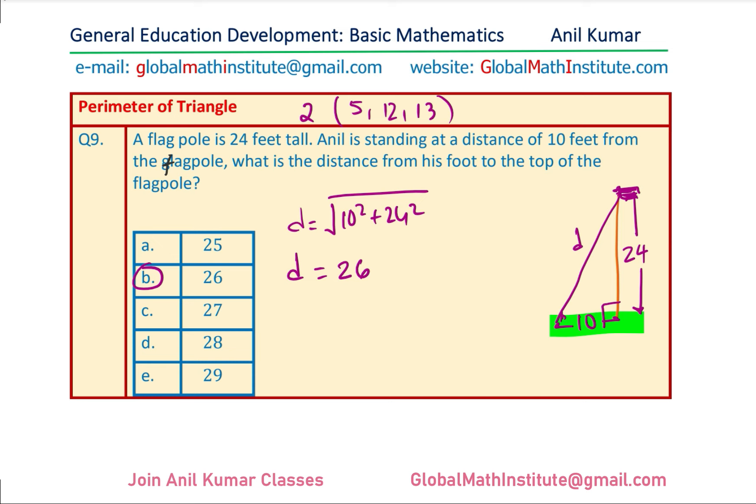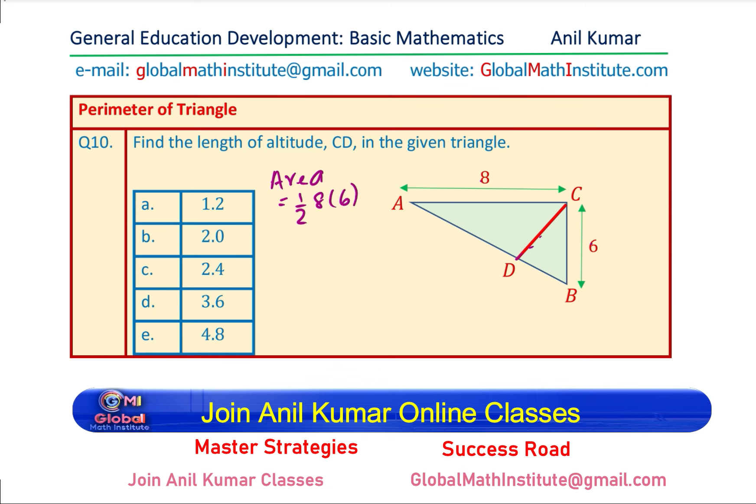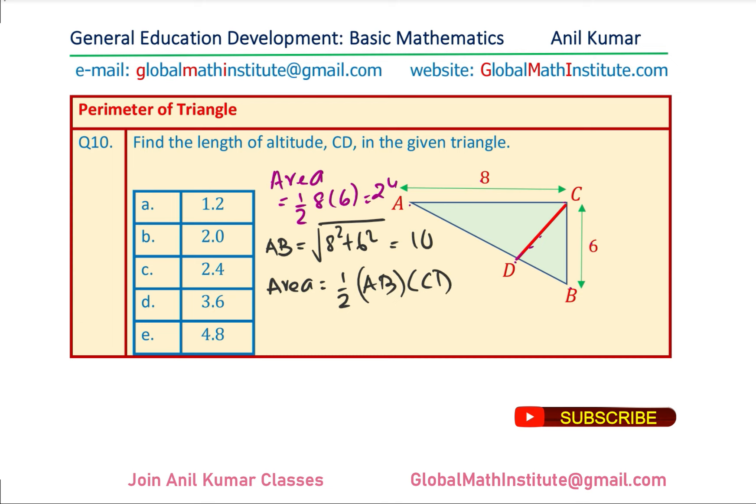The last question is the thinking question. Find the length of altitude CD in the given triangle. The key insight is that the areas are related. The area of triangle ABC = ½ × 8 × 6 = 24. But the area can also be written as ½ × AB × CD. AB is the hypotenuse: √(8² + 6²) = 10. So: ½ × 10 × CD = 24.